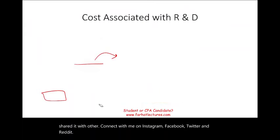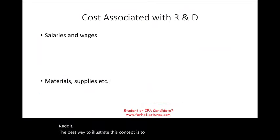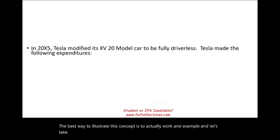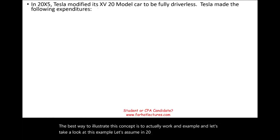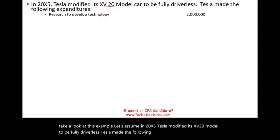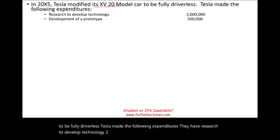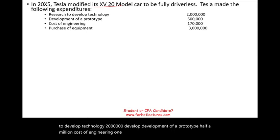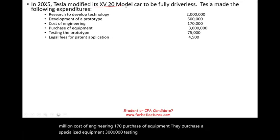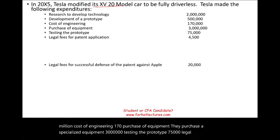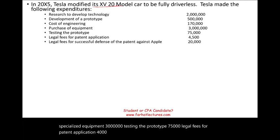The best way to illustrate this concept is to work an example. Let's assume in 20X5, Tesla modified its XV20 model to be fully driverless. Tesla made the following expenditures: research to develop technology — $2 million; development of a prototype — $500,000; cost of engineering — $170,000; purchase of specialized equipment — $3 million; testing the prototype — $75,000; legal fees for patent application — $4,500; and legal fees for successful defense of the patent against Apple — $20,000.